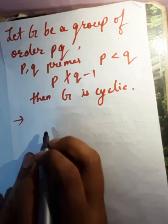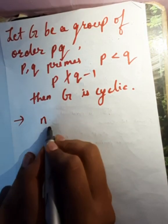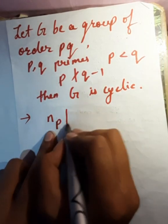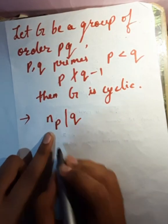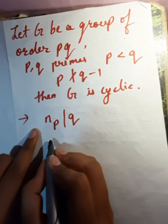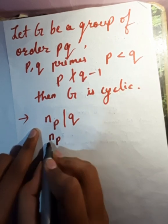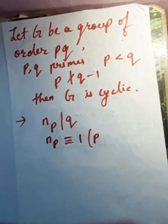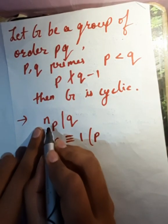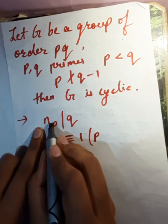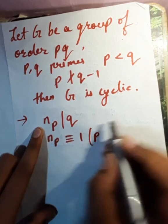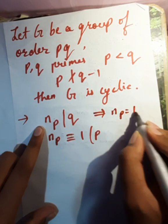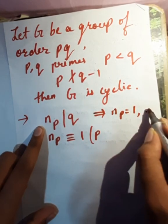By Sylow's theorem, we know that the number of p-Sylow subgroups divides q, and the number of p-Sylow subgroups is congruent to 1 mod p. Since n_p divides q, n_p can be either 1 or q since q is prime, which implies n_p equals 1 or q.